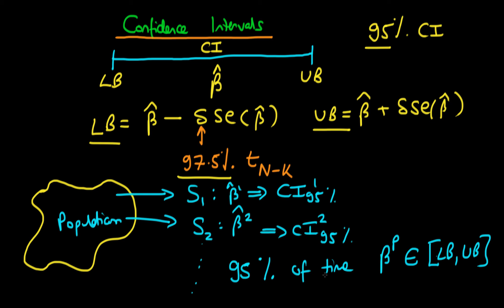Notice that this doesn't mean that we are 95% confident that the parameter lies in that range — that's not what we mean at all. Because we have no way of telling whether we are in a circumstance whereby the true population parameter beta P lies in that particular confidence interval calculated for that sample, or whether it doesn't. All we know is that if we repeated the process a large number of times and calculated confidence intervals for each of those samples, then the true population parameter would lie in that range 95% of the time.